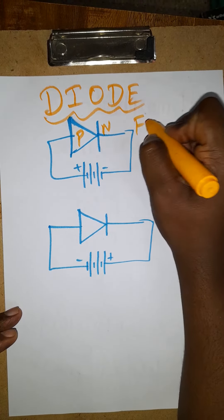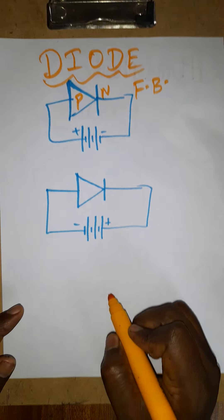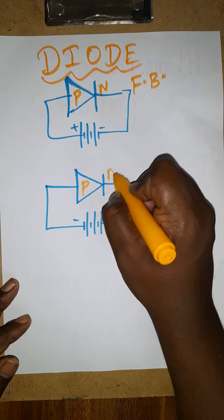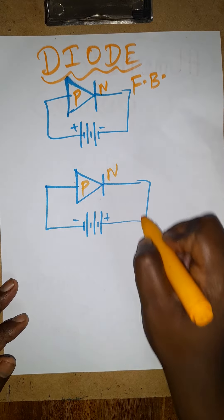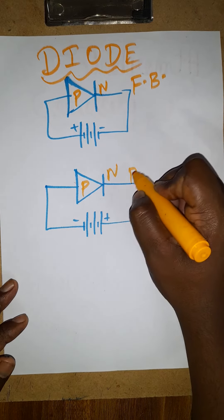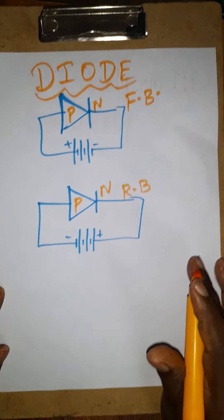The first diagram is for forward bias: P-type, N-type. When positive is connected with negative and negative is connected with positive, this is called reverse bias. In forward bias, the conductivity will be more.